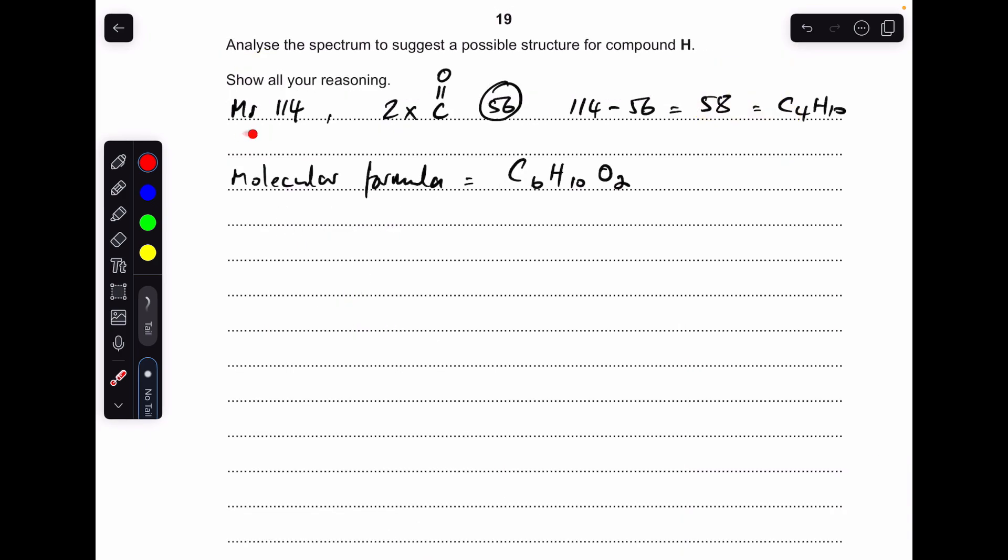So the first thing you need to do is use this information to work out the molecular formula of H. The MR is 114. There's two carbonyl groups that add up to 56. If we take the 56 off, we'll have 58 remaining, which means there's another four carbons and 10 hydrogens. So if we add that onto the two carbonyl groups, we get a molecular formula of C6H10O2. The examiner is going to want to see that processing there.